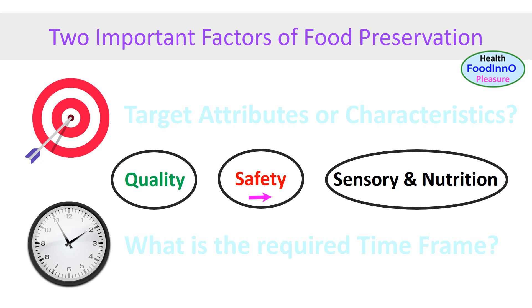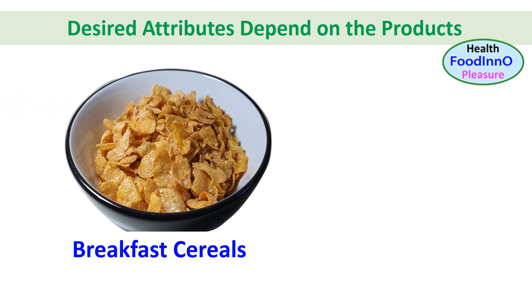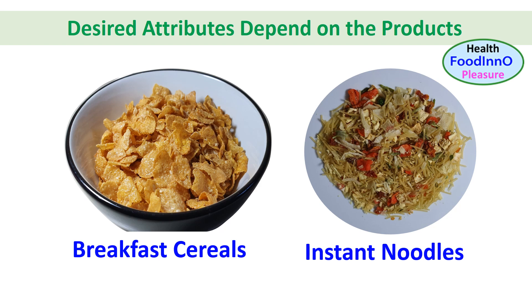Desired shelf life or time frame depends on different scenarios. Consider breakfast cereals and instant noodles. In the case of breakfast cereals, we need long bowl life with a crunchy sound — milk should not soak quickly, so the product should have a crust with limited open pores. However, for instant noodles, it should soften quickly, requiring much more open pores with no crust. Desired porosity depends on the type of product.